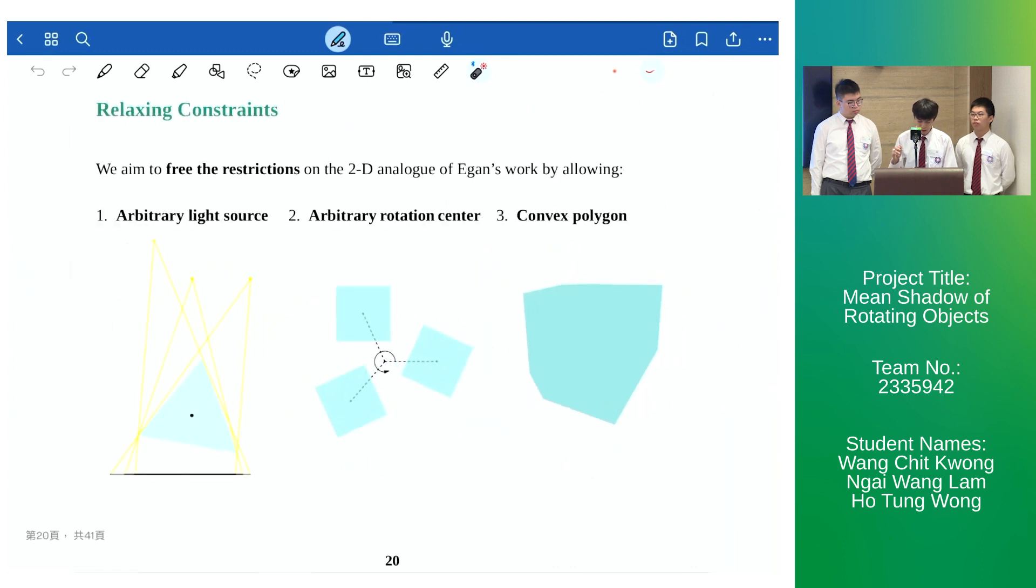For that reason we aim to free the restrictions by allowing arbitrary light source position, arbitrary rotation center, and convex polygons.